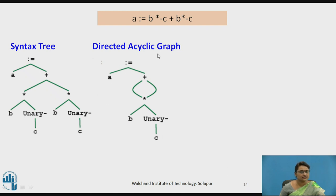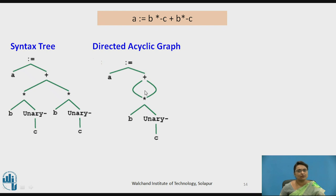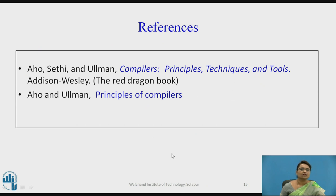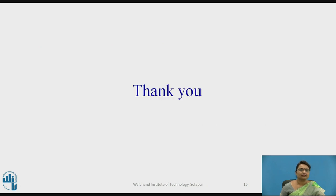The syntax tree can also be represented as a directed acyclic graph. In this, wherever repetition occurs — for example b * (–c) and b * (–c) appearing twice in a syntax tree — the same operation is not repeated; instead, the same pointer is reused. You can see the example of how this is implemented as a data structure. These are my references. Thank you.